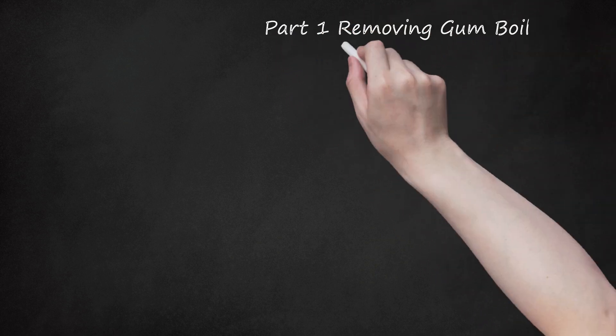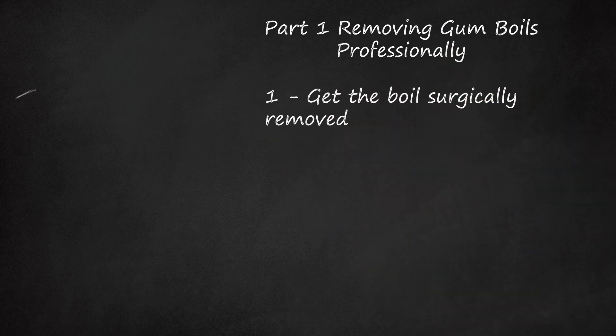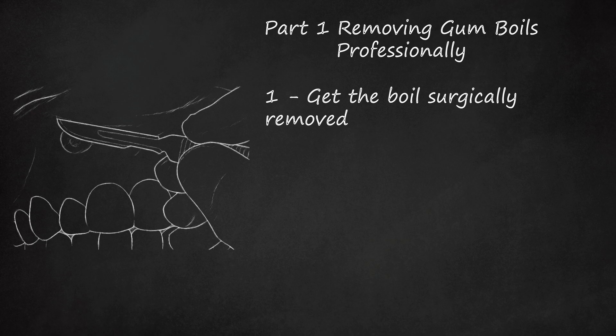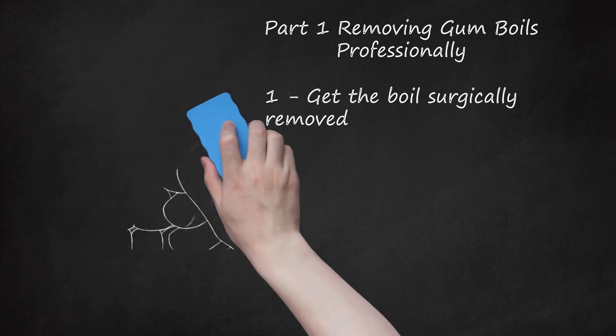Part 1: Removing Gum Boils Professionally. If you have chronic gumboils or gumboils that are cosmetically embarrassing, you may want to consider getting them surgically removed. This can greatly increase the chance of the boil not returning again. You'll need to speak with a gum specialist, such as a periodontist, about this option to see what they recommend. Your dentist or gum specialist may recommend simply draining the boil instead of surgically removing it, depending on the location of the boil and how complicated it would be to remove it. In this case, they will give you antibiotics to take for at least 5 days after draining.